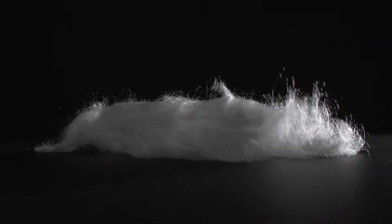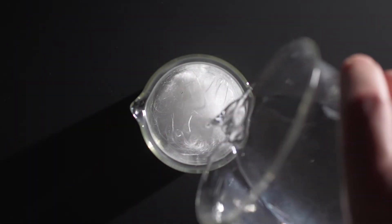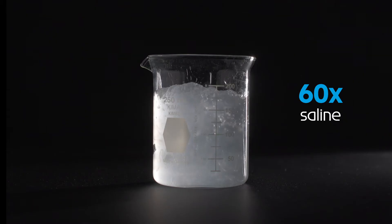SAF is a superabsorbent fibre which is white and odourless. SAF fibres can absorb up to 200 times their own weight in water and up to 60 times their own weight in saline.